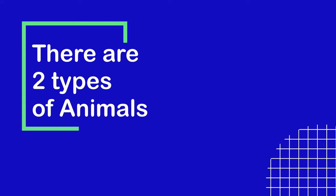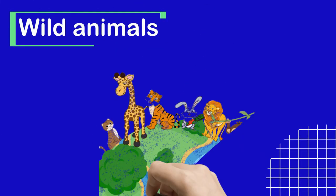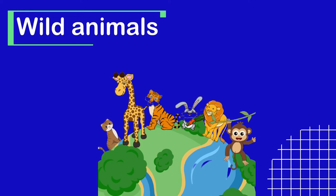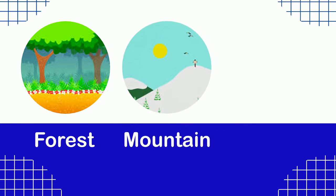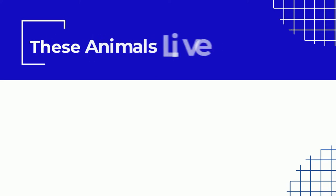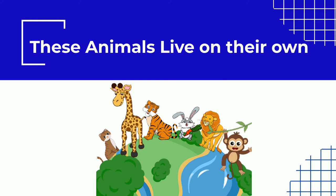The two types are wild and domestic. Wild animals are those animals that live in a natural environment like forests, mountains, deserts, etc. These animals live on their own and do not depend on humans for anything, and are hard to tame.